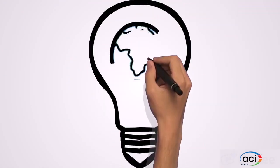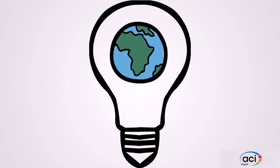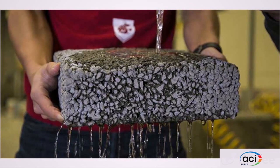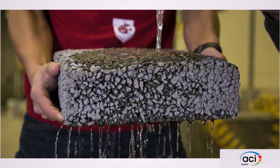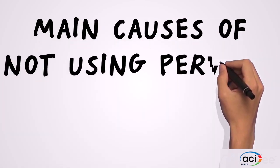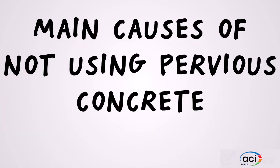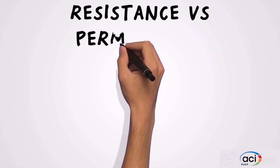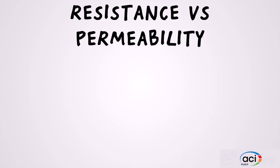To improve this and to reduce the consequences, the use of pervious concrete capable of allowing infiltration at an adequate percentage is proposed. The main reason for not using pervious concrete is the search for resistance above permeability parameters in infrastructure.